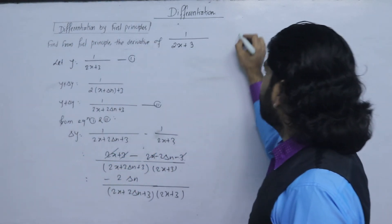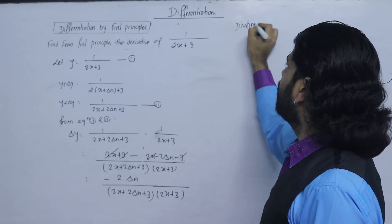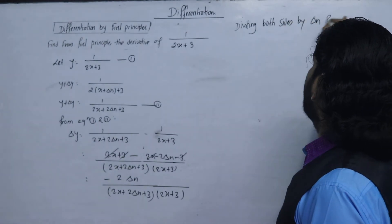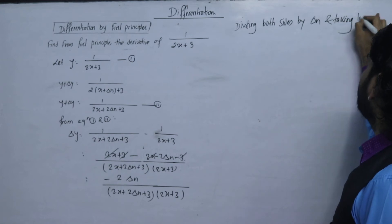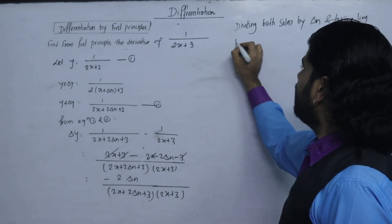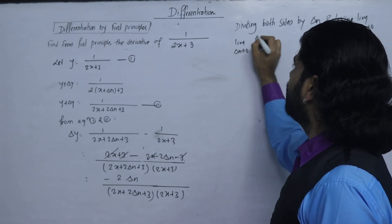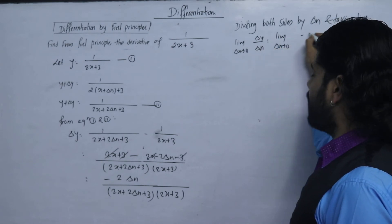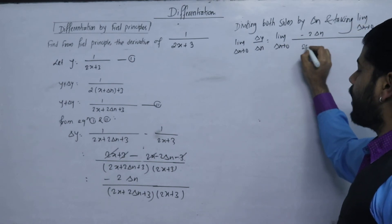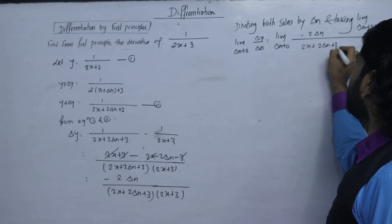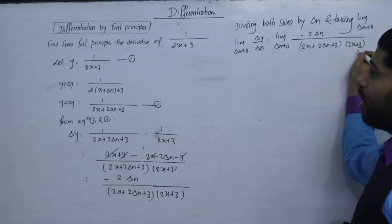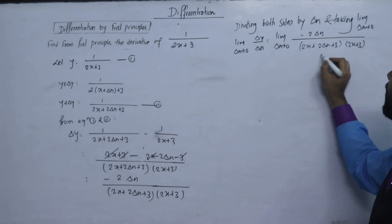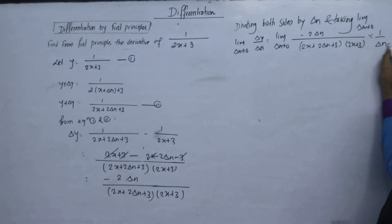We have further simplification by dividing both sides by delta x and taking the limit as delta x tends to 0. The limit of delta y upon delta x equals the limit as delta x tends to 0 of: minus 2 delta x upon (2x plus 2 delta x plus 3)(2x plus 3).